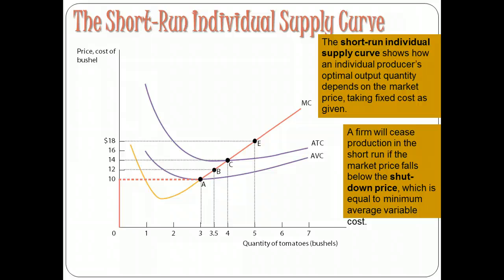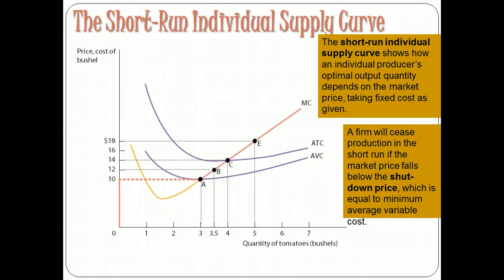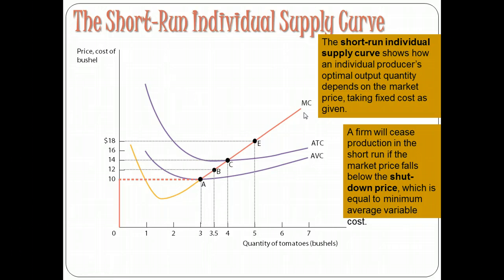Just as a refresher: if the price is $10 at point A, it crosses the average variable cost curve at its minimum — that's our shutdown price. We're willing to operate as long as the price is at least $10. If it's less than $10, we shut down because we can't cover our variable costs, and shutting down minimizes our loss. If the price is above $10 we'll operate, at least in the short run, even though between points A and C we're operating at an economic loss. So our short-run individual supply curve shows we produce nothing between $0 and $10, and from $10 on we'll produce three bushels and up depending on marginal revenue.